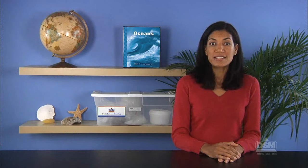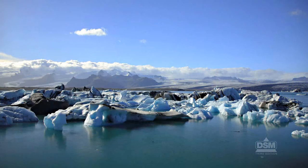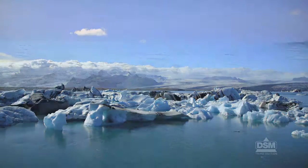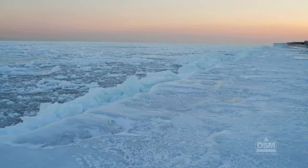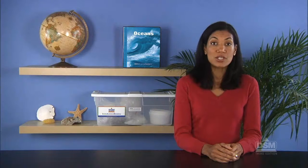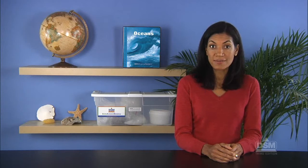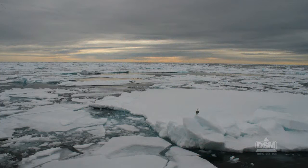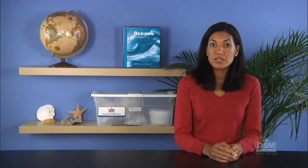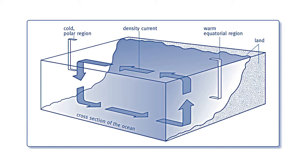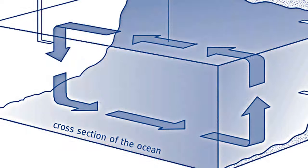Explain to the class that this is what happens near the poles in the Arctic Ocean and in the ocean surrounding the continent of Antarctica. There, the temperature is so cold that ocean water freezes. When ocean water freezes, only the water freezes, leaving behind salt to make the remaining water even saltier. This very salty, very dense water sinks to the bottom of the ocean, pushing the less dense, less salty water out of the way. The resulting density current flows downward from top to bottom.